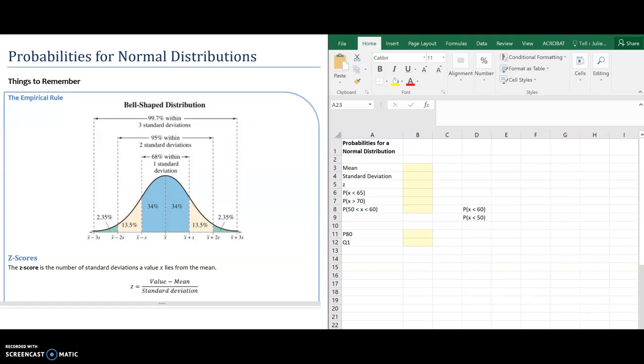The empirical rule tells me that 68% of my data is going to be within one standard deviation of the mean, so that's this blue area here in the middle. 95% of my data will be within two standard deviations, and 99.7% of my data will be within three standard deviations.